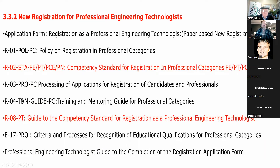Looking at Section 3.32 of new registration for professional engineering technologists, I've highlighted RO2 and RO8, but the other documents are also important to read through. You also need the application form for professional engineering technologists and the guide to completion of the registration application form - that is currently off the website as they're updating it but it will be coming back.